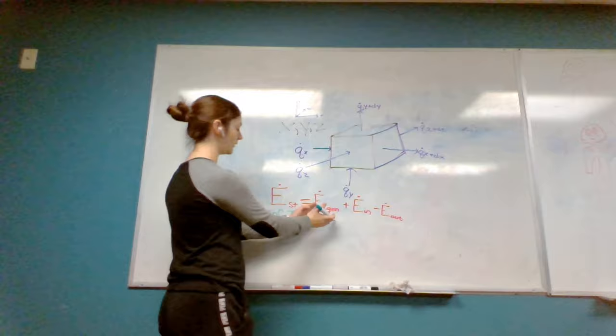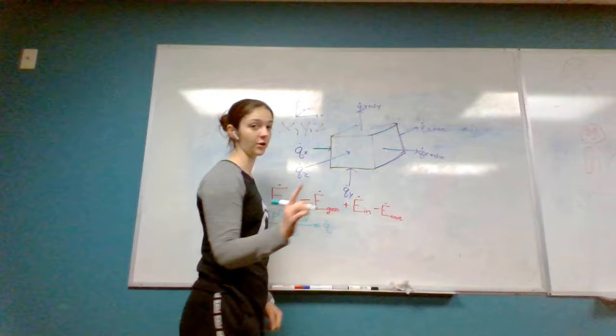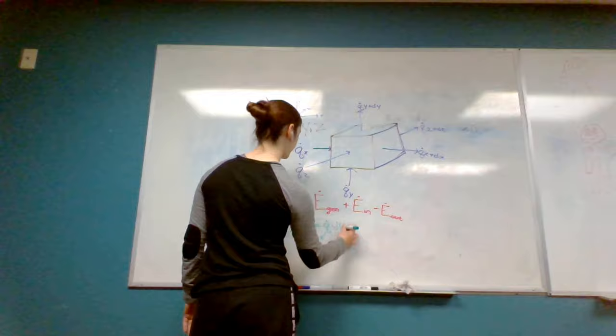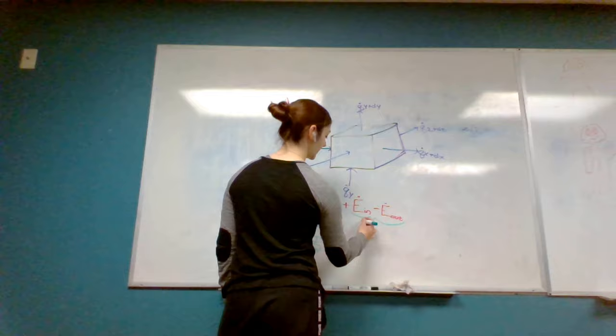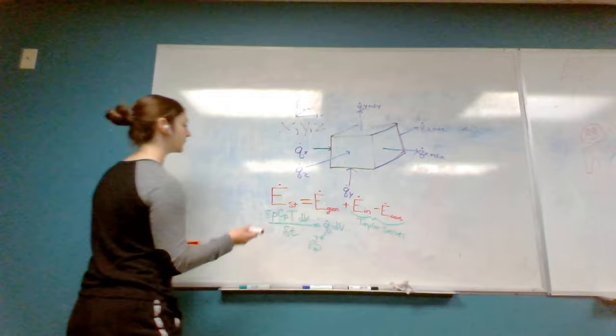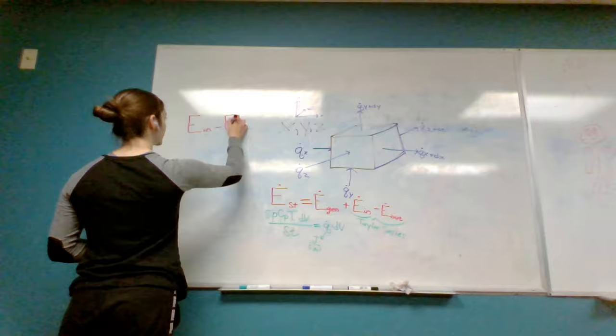That rate equals our energy flow generation, which we represent with a unique Q specific in units of joules per second per volume (meters cubed), so we must multiply by a differential volume. These terms will be combining together and we'll do a Taylor series expansion. I will complete that to the left of the board so we can see it more in depth.